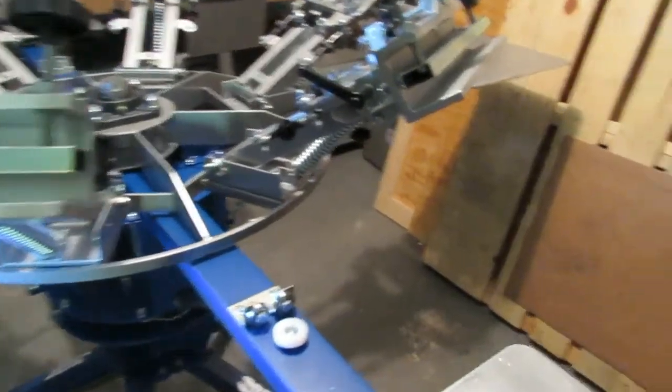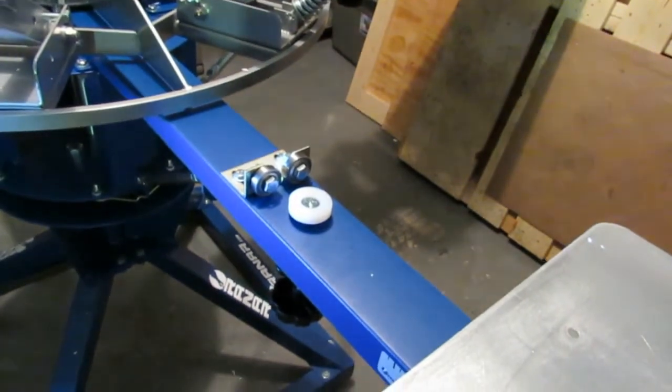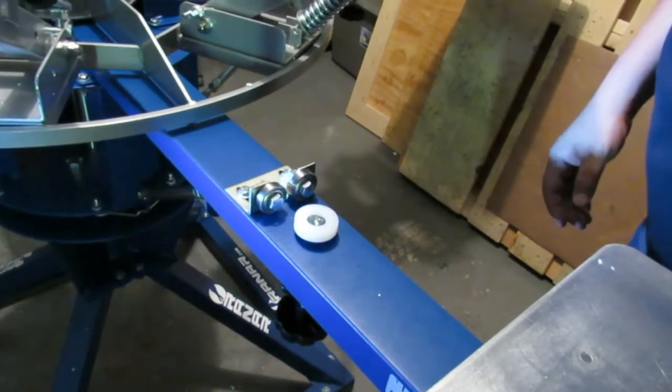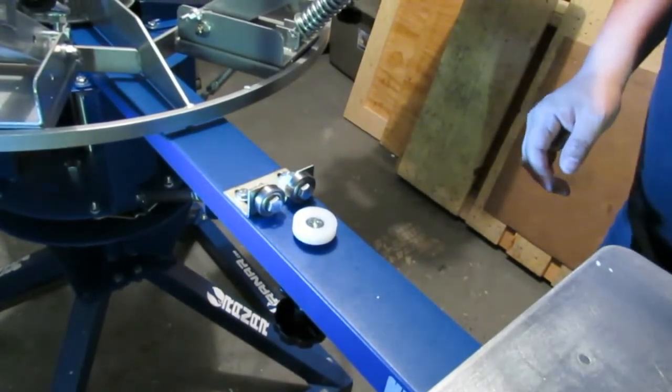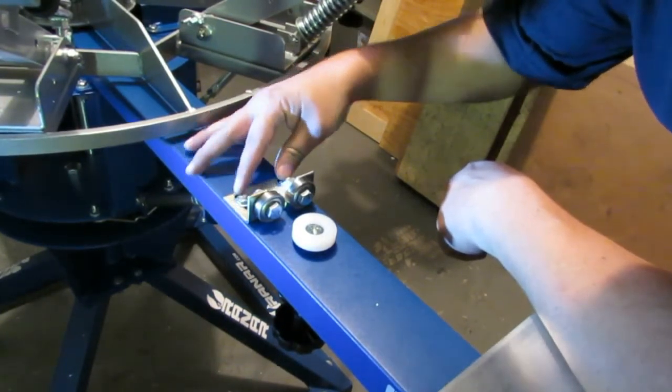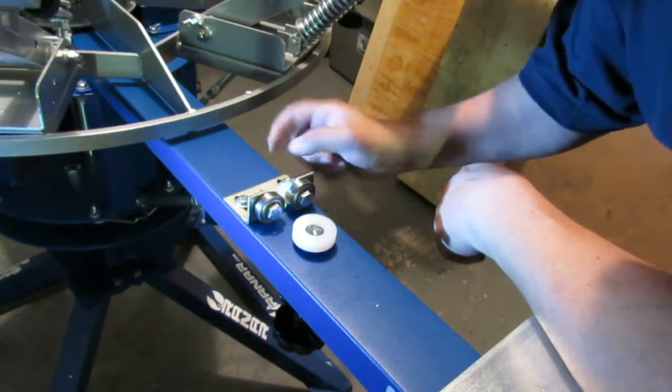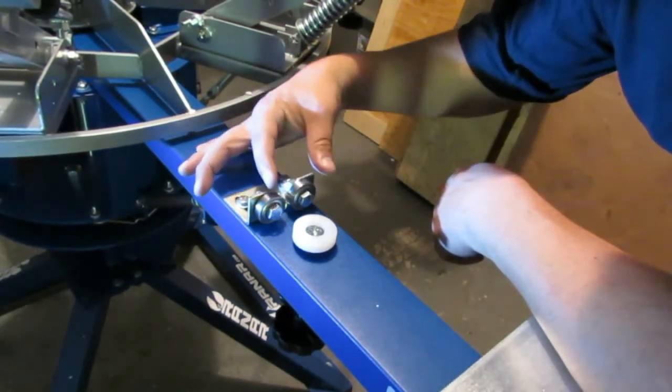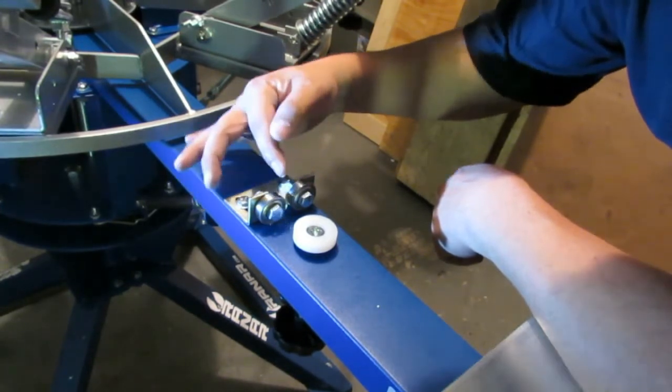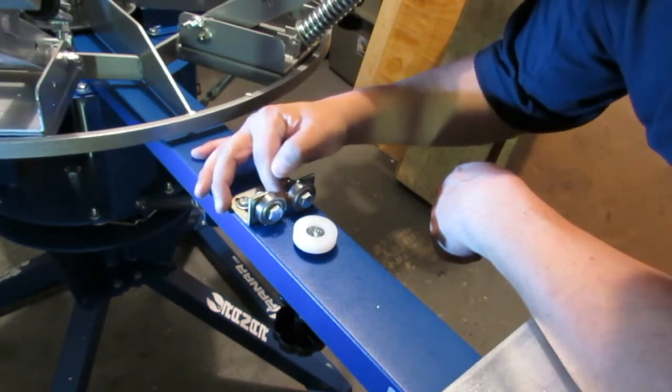All right, so that is it on the registration bracket assembly. Now do remember, do not over tighten these bolts, because you can bend the other side of the arm and this could potentially bring the bearings closer together, and the key will either not fit in there or it will damage it over time.